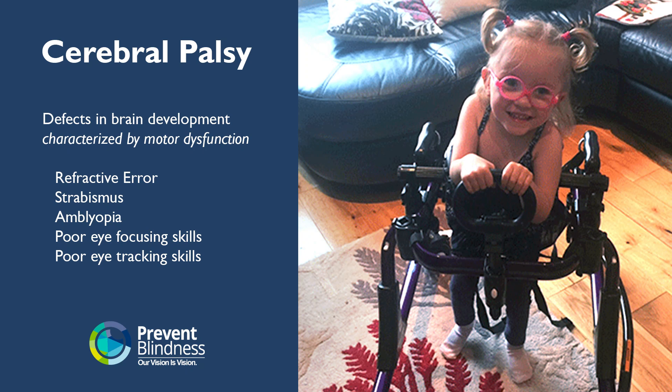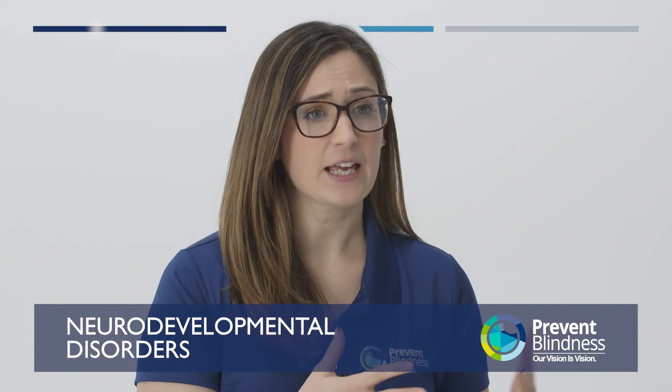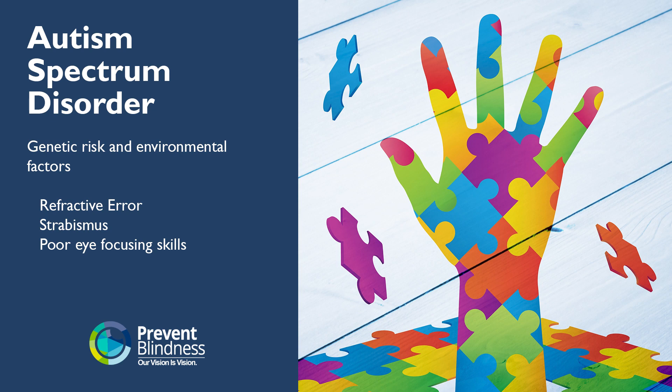Children with cerebral palsy are at a greater risk for developing refractive errors, strabismus, and amblyopia. They're also more likely to have issues with eye tracking and eye-focusing skills. Children with Down syndrome are more likely to develop refractive errors, amblyopia, and strabismus, and are also more likely to suffer from poor eye-focusing skills. Children with Autism Spectrum Disorder are more likely to have refractive errors or strabismus, and to also struggle with eye-focusing skills.